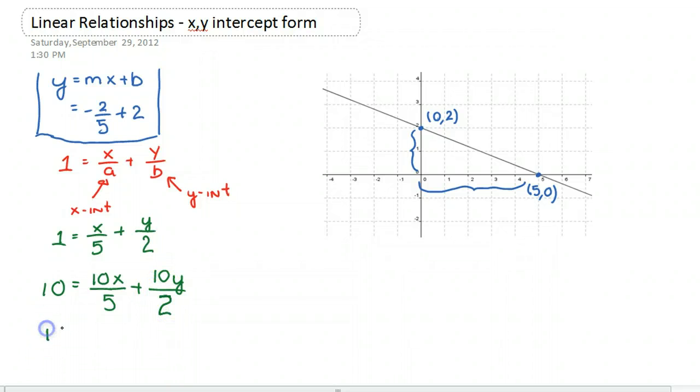So what that means is that when I multiply both sides by 10, it ends up cancelling out the denominators, which is really nice.